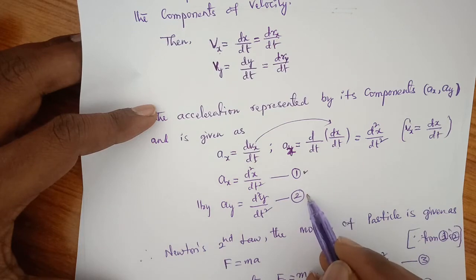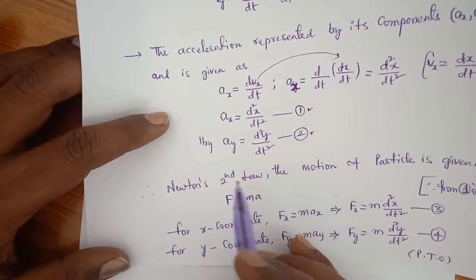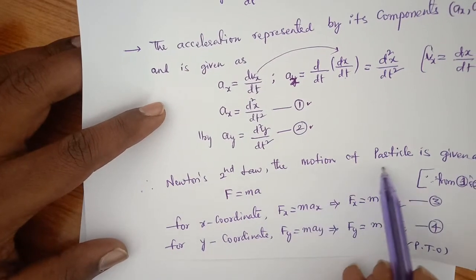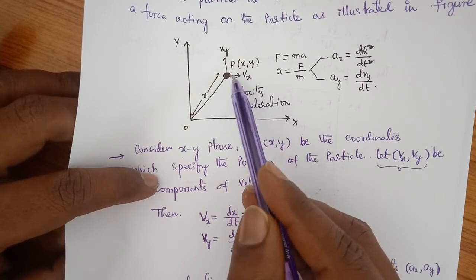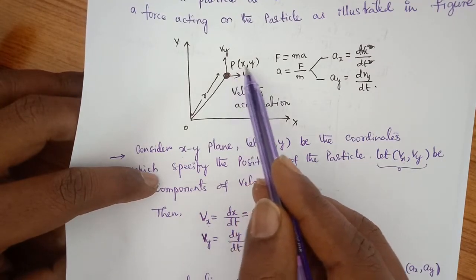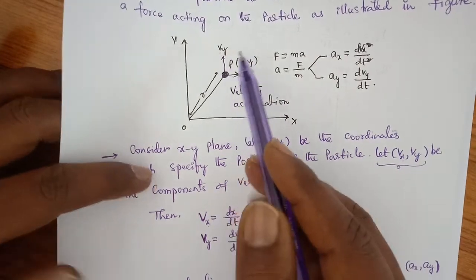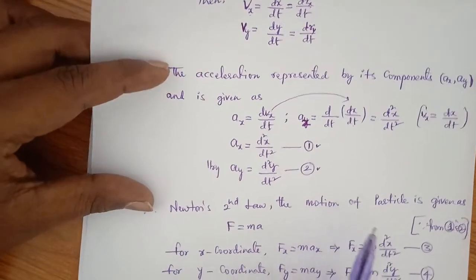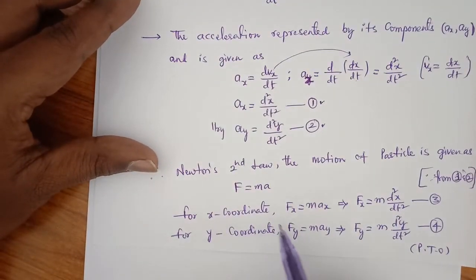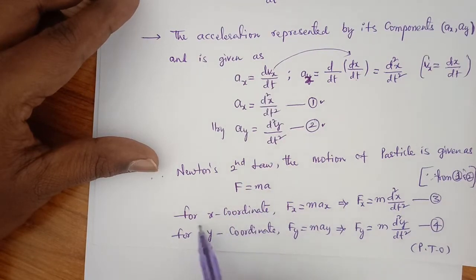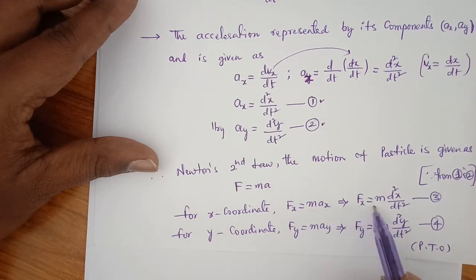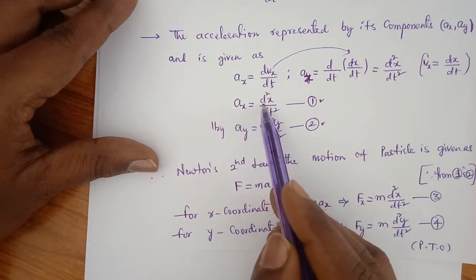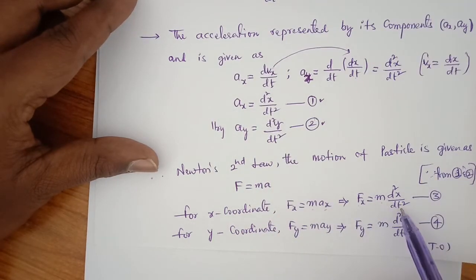Let us consider these as equation 1 and equation 2. According to Newton's second law, the motion of a particle under force is given as F equals MA. Because force is applied on a particle and that particle moves in a particular direction having X and Y components, for the X coordinate: FX equals M times AX, which we write as FX equals M times d²X/dt².